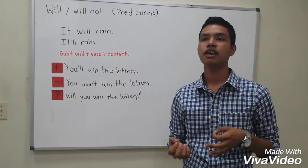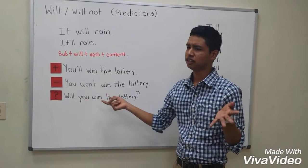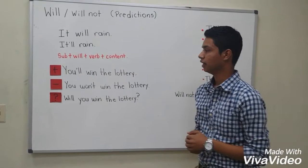And what happens if you want to say a negative sentence? You are going to use won't. You can say to him: you won't win the lottery. And this is a negative sentence.